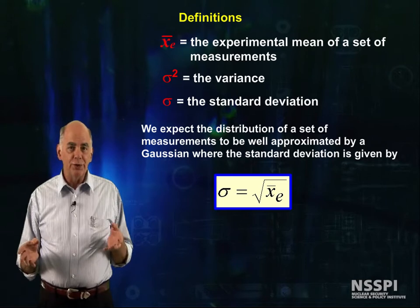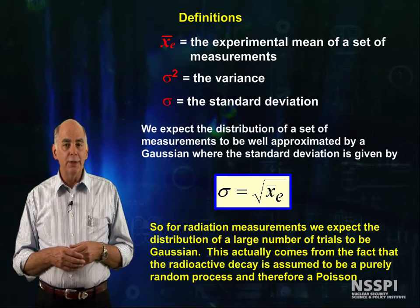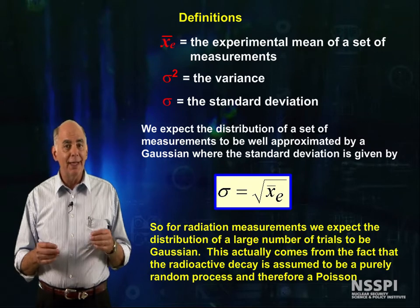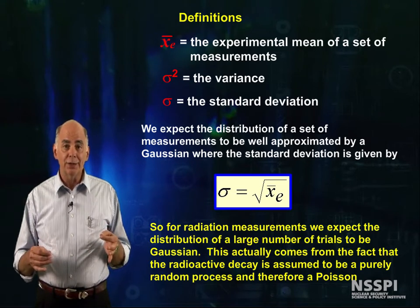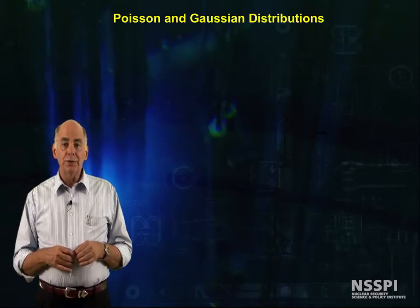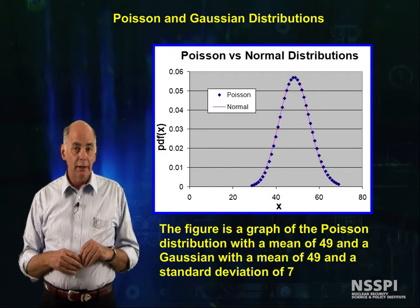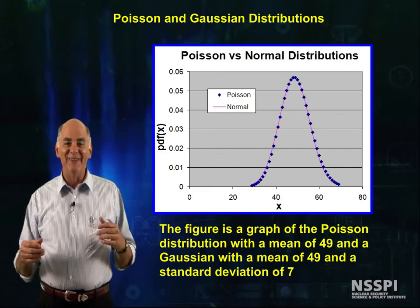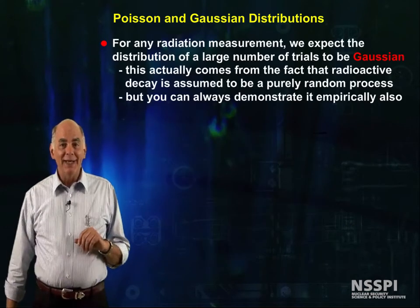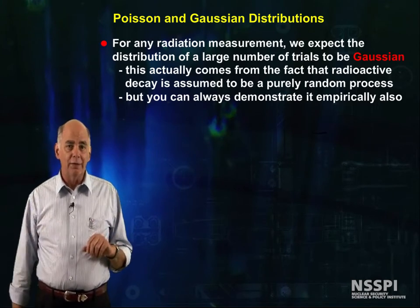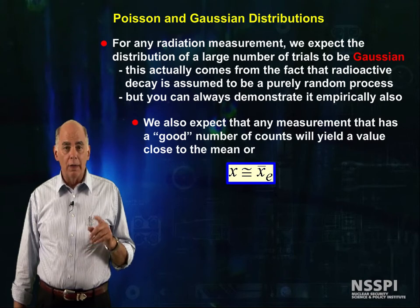It's really hard to get 14.27 counts. But it turns out this works very well. For radiation measurements, we expect the distribution of a large number of trials to be Gaussian. This comes from the fact that radioactive decay is assumed to be a purely random process, and therefore a Poisson. You can demonstrate this empirically, or you can look at this figure: if I plot a Poisson distribution with a mean of 49 and a Gaussian with a mean of 49 and a standard deviation of 7, it looks plenty good enough. We also expect any measurement with a sufficient number of counts to have a value close to the mean — x is approximated very well by x-bar sub e, and therefore the standard deviation is the square root of x-bar sub e.